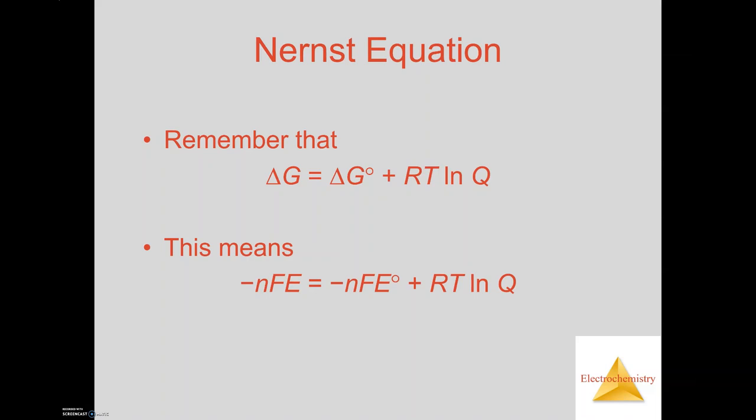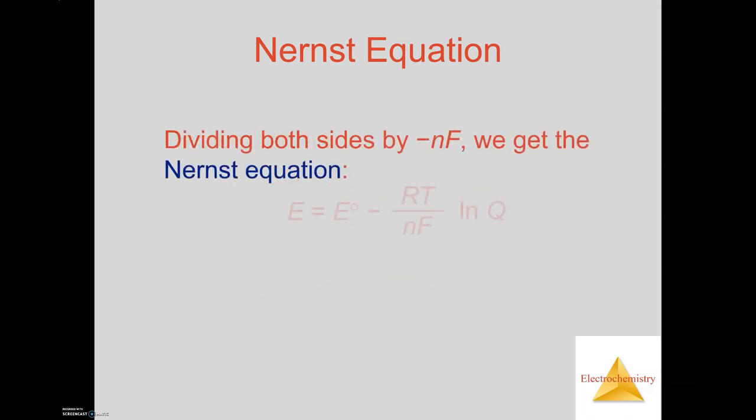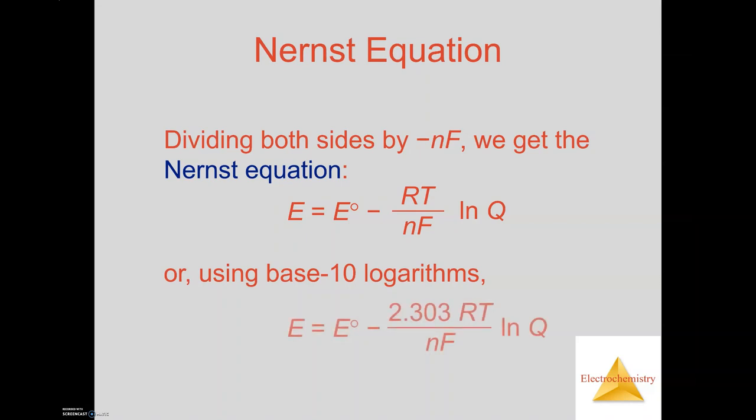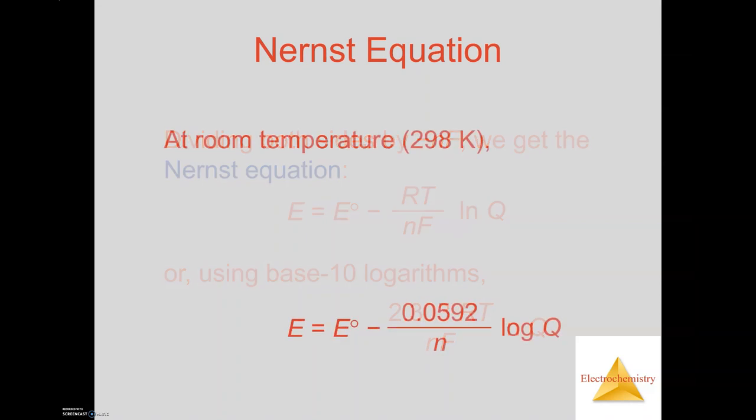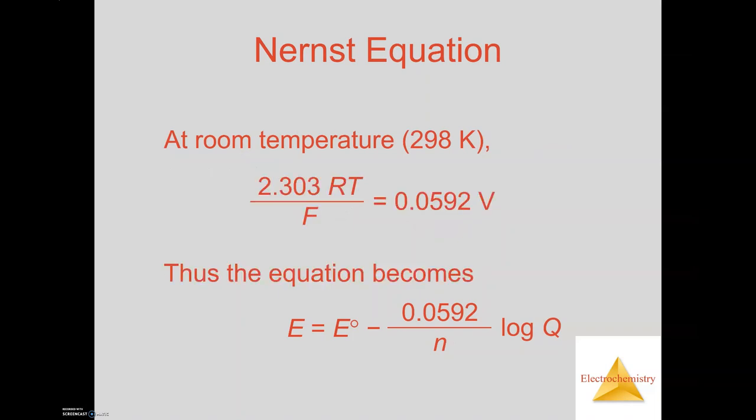So instead of using Delta G, we have minus nFE for both of the Delta G and Delta G naught. We divide each side by minus nF, we get the starting of what is called the Nernst equation. So we go through some basic algebra and what we end up having is an equation where E is equal to E naught minus 0.0592 over n times the log of Q. So what you determine here is you can see that we have the cell potential under non-standard conditions.